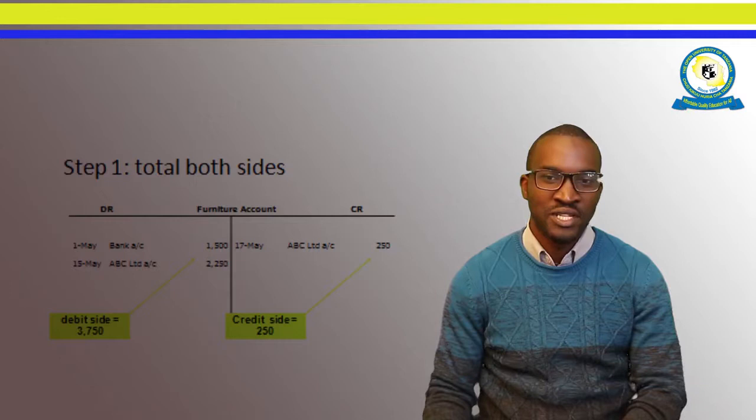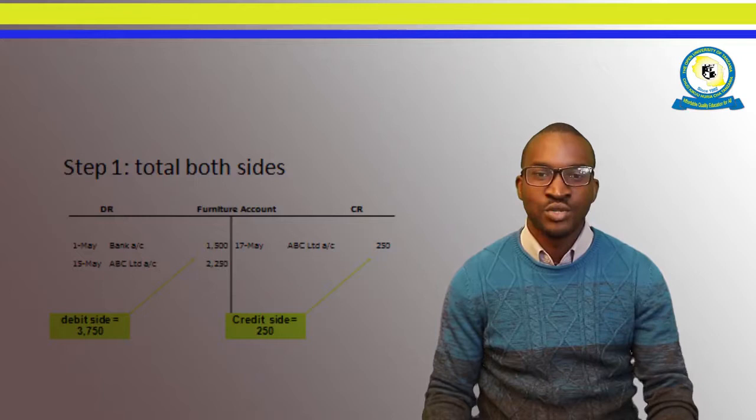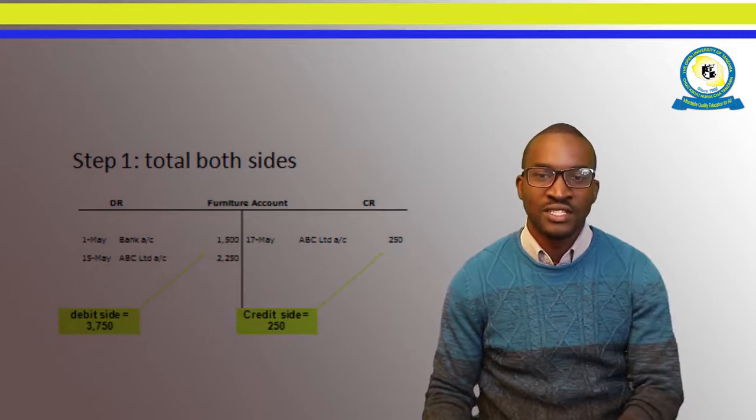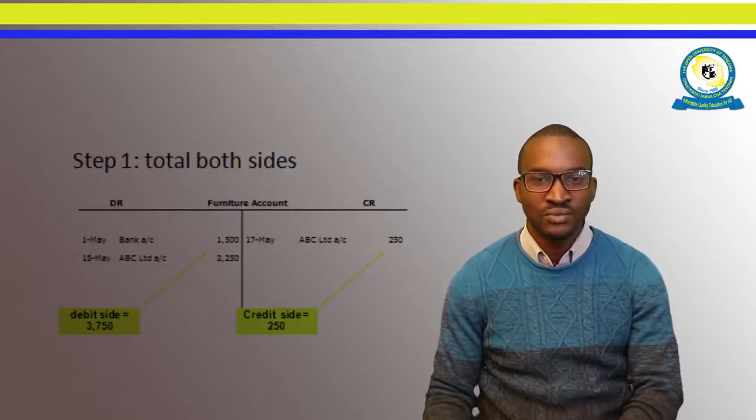You have a T account, and here you can see we have a financial account with the debit side and the credit side. DR represents the debit and CR represents the credit. So the first step is to total both sides of the account — total the debit side and the credit side. If you total the debit side, you get this figure, and if you total the credit side, you get these figures. The total of the debit is $3,750 and the total of the credit is $250, which is less.